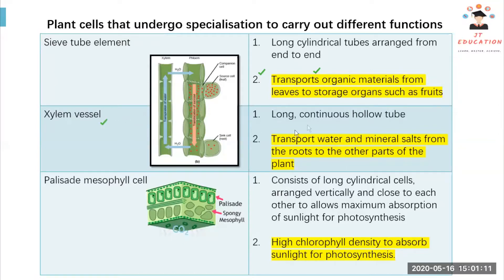We have the xylem vessel — it's a long continuous hollow tube, and it is used to transport water and minerals from the roots to parts of the plant like the palisade mesophyll cell.